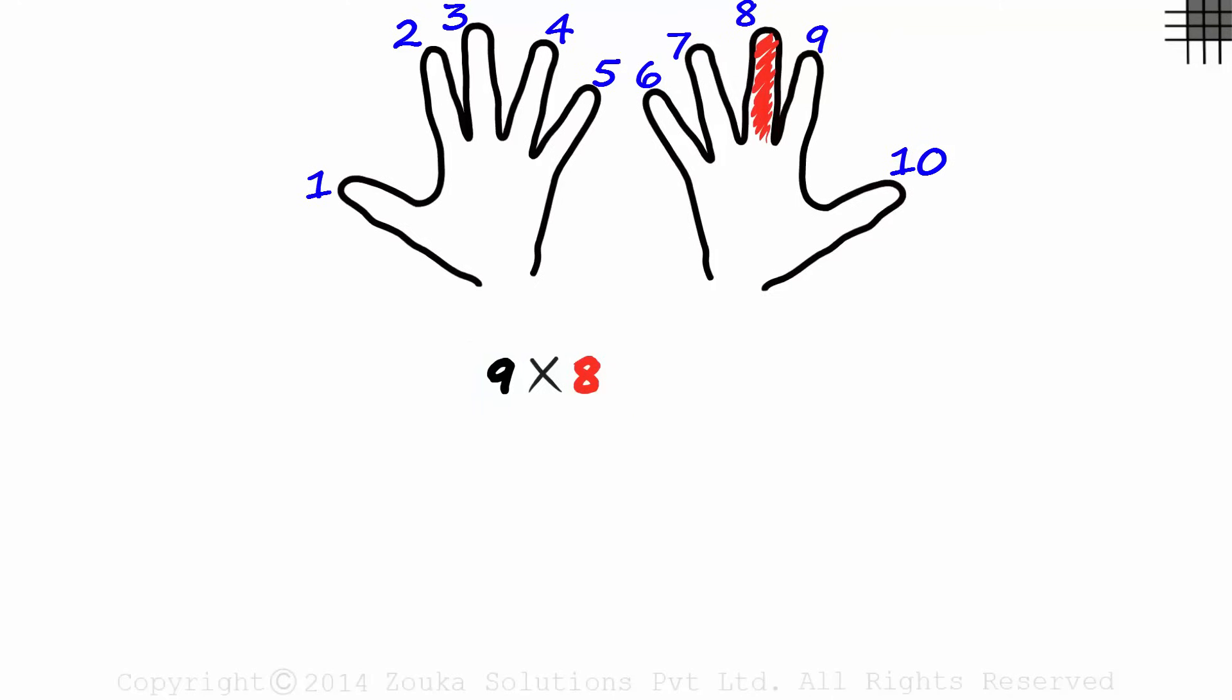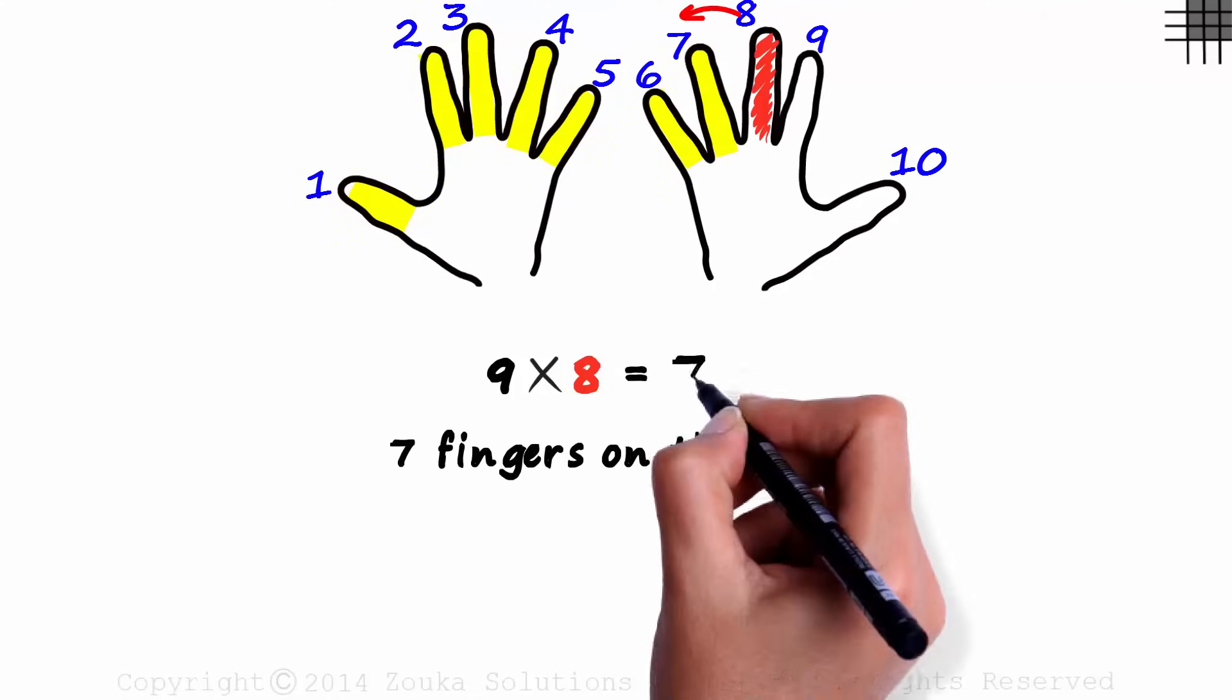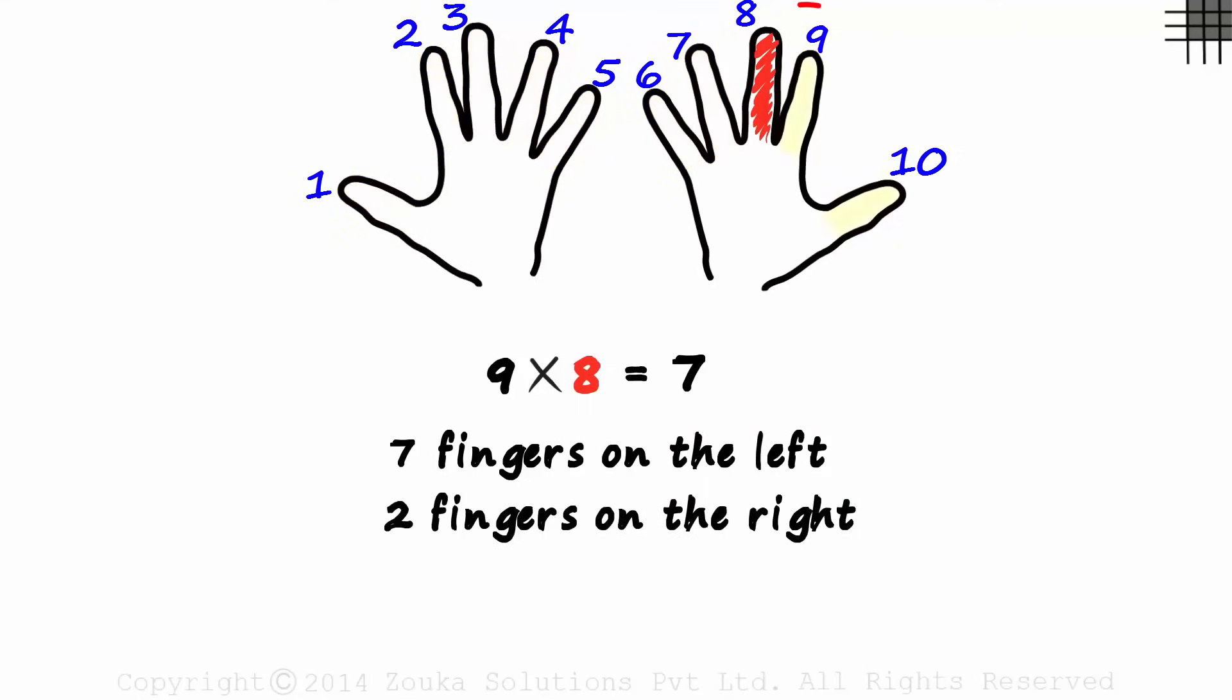We colour it as we are finding the 8th multiple of 9. To get the answer, all we need to do is count the numbers to the left of the coloured finger and the numbers to its right. There are 7 fingers on the left, so we write a 7 first. And then there are 2 on its right, so we write a 2. 9 times 8 is 72.